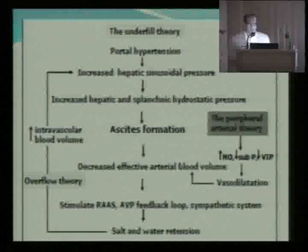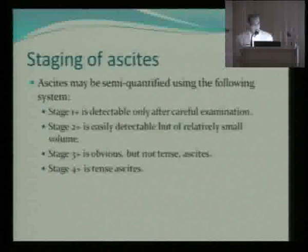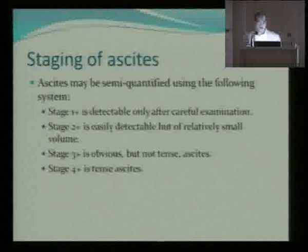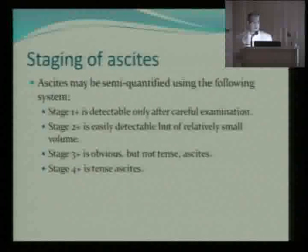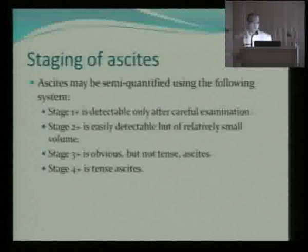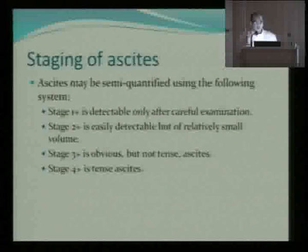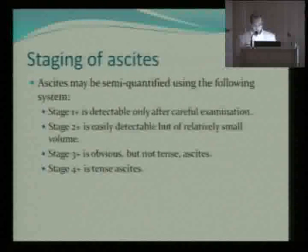There are several theories about ascites — difficult to cover in 15 minutes — but staging is important from a management point of view. Stage 1 is detectable only after careful examination, meaning you need an ultrasound to confirm it. Stage 2 is usually easily detectable but of relatively small volume. Stage 1 and 2 can usually be managed with diuretics, but stage 3 and 4 may need other modalities of treatment.